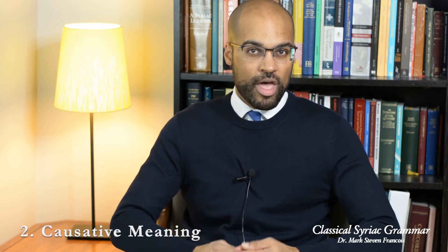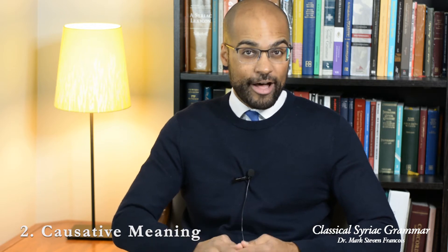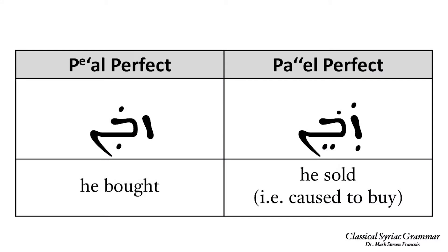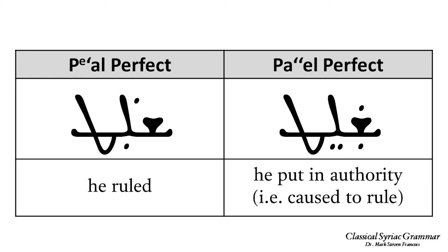Second, verbs in the Pa'al can sometimes be a causative version of the meaning that verbal root has in the Pe'al. For example, 'zvan' means 'he bought' in the Pe'al, while 'zaben' means 'he sold' — in other words, 'he caused to buy' — in the Pa'al. Similarly, 'shalat' means 'he ruled' in the Pe'al, while 'shalet' means 'he put in authority' — he caused to rule — in the Pa'al.